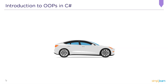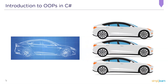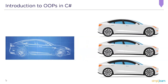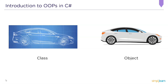Let's look at a real-world example. On my screen we have a car — this particular car happens to be an object. Here you can see a blueprint of the same car. A blueprint is one single entity, and using this blueprint I can create any number of cars, which happen to be objects. So the blueprint of the car is considered the class, and the actual cars built using the blueprint are called objects.